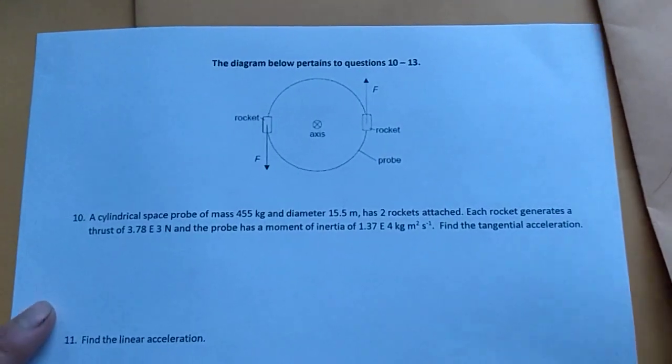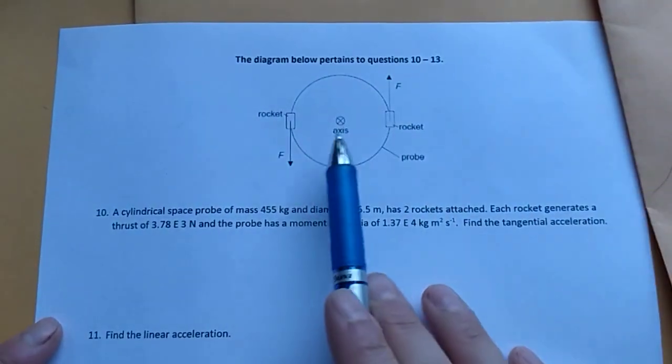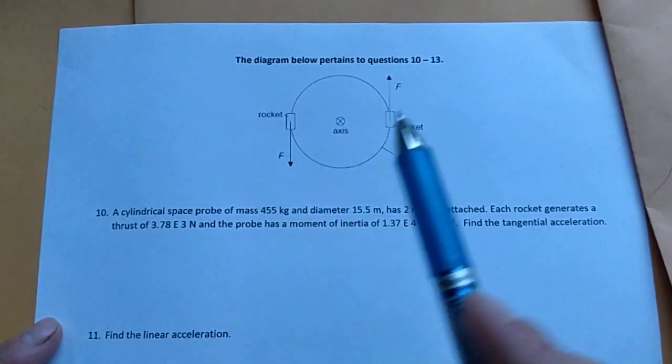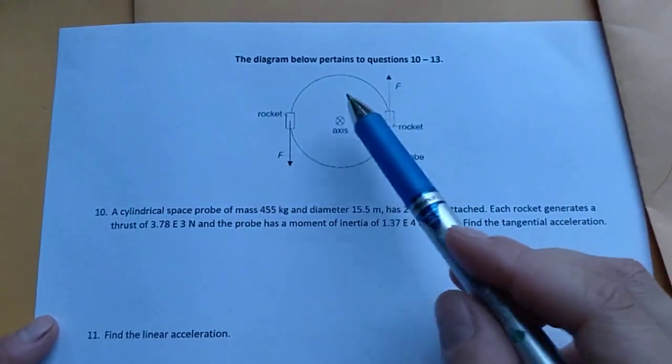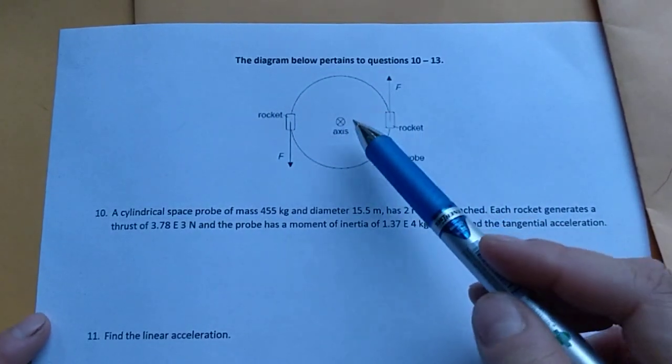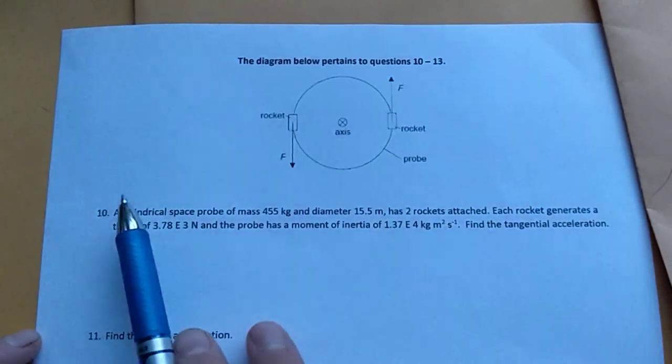Okay, the diagram below pertains to questions 10 through 13. So I can see I have this space probe and there are two rockets attached and it's rotating about its center which is the axis of rotation.